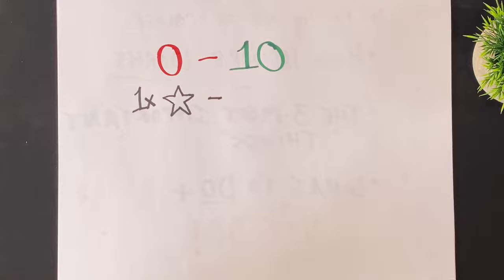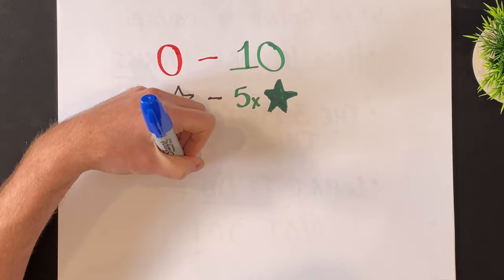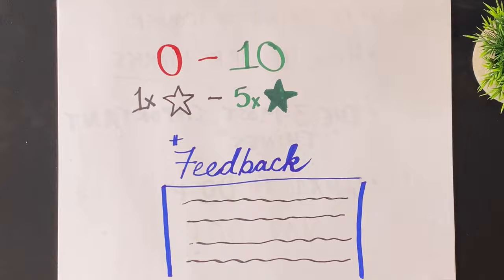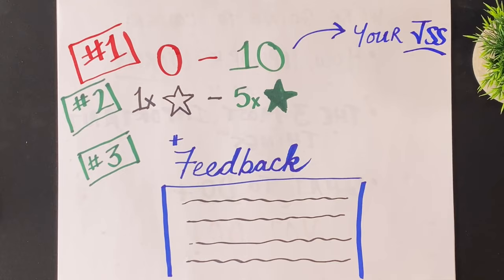Upwork's reviews process is really important to understand. Once you complete a job and the client is ready to end your contract, they'll get asked a bunch of questions. On a scale from 1 to 10, how likely are you to recommend this freelancer to a friend or colleague? Then, on a scale from 1 to 5 stars, rate the freelancer's skills, availability, quality of work, adherence to schedule, communication, and cooperation. Then, they can write their own feedback note for you.